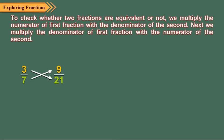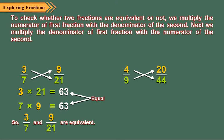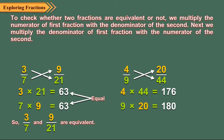Consider the fractions three upon seven and nine upon twenty-one. The product of three and twenty-one is sixty-three. The product of seven and nine is also sixty-three. So, three upon seven and nine upon twenty-one are equivalent. Again, consider four upon nine and twenty upon forty-four. The product of four and forty-four is one hundred seventy-six. The product of nine and twenty is one hundred eighty. So, four upon nine and twenty upon forty-four are not equivalent.